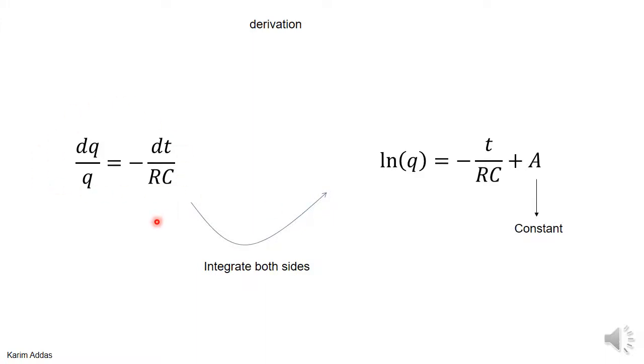Integration of dq/q is ln(q), integration of minus dt/(RC) is minus t/(RC) plus a constant. Now to specify what this constant is for this particular problem, you need an initial condition.